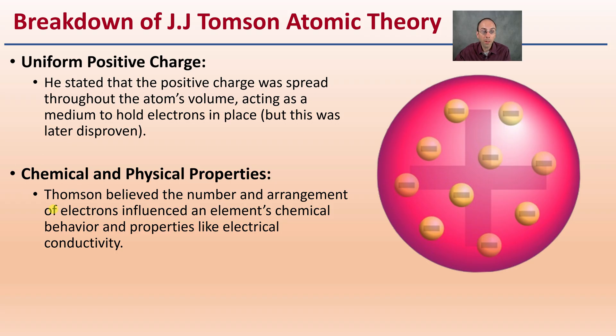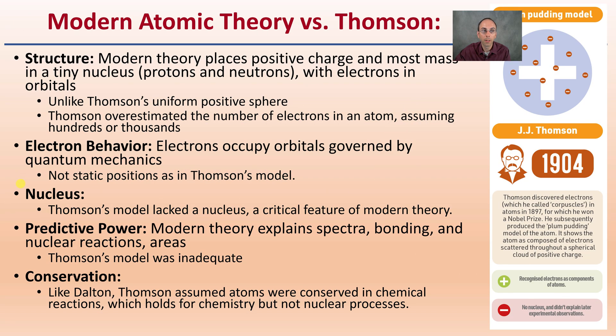Regarding chemical and physical properties, Thompson believed that the number and arrangement of electrons influence an element's chemical behavior and properties, which we still use today, particularly in what we now call valence electrons.